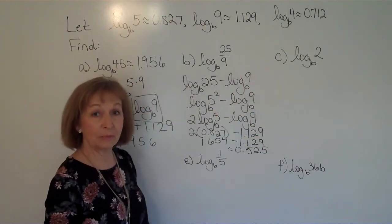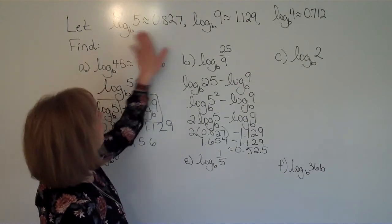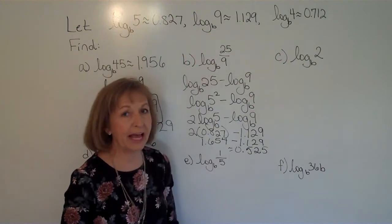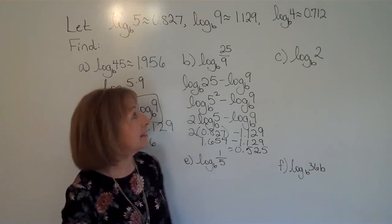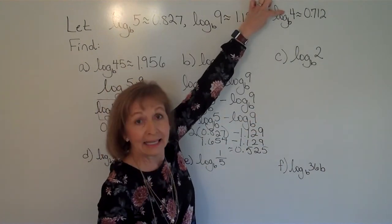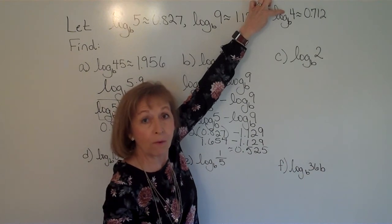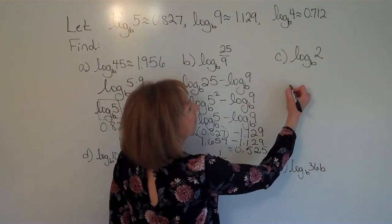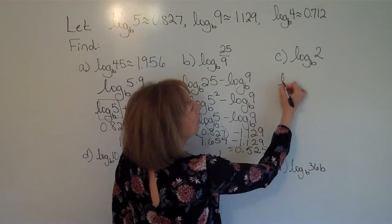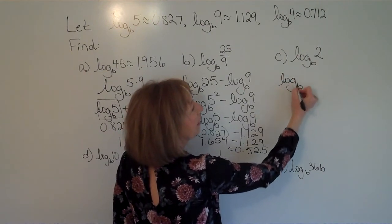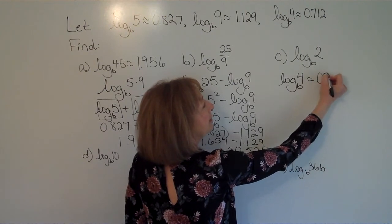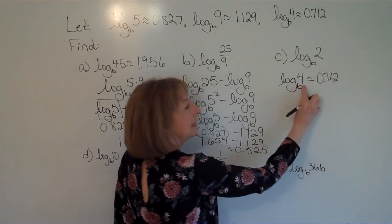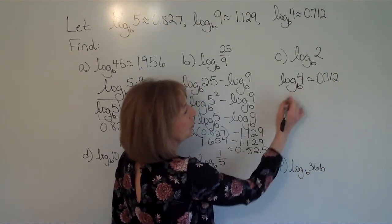Okay, next up, log base b of 2. I look, and again, I don't have a log base b of 2. But 2 is something that I can get to by the log base b of 4. So if I have the log base b of 4 is approximately equal to 0.712, and I know 4 is 2 squared.